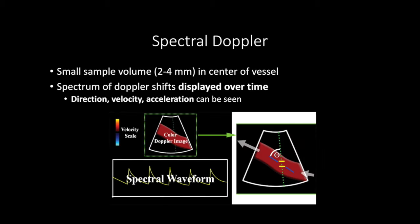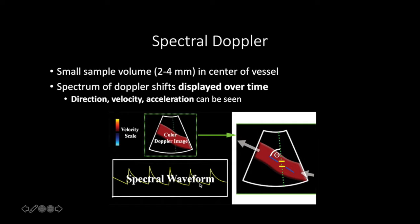Spectral Doppler gives you waveforms that people can sometimes find confusing. Here, you're sampling a very small volume of tissue - usually the center of the vessel - and you get a waveform showing Doppler shifts displayed over time. On the x-axis we have time, and on the y-axis we have Doppler shift, or velocity if we calculate it from the Doppler shift. This gives you information about the direction of flow, the velocity of flow, and the acceleration of flow over time.